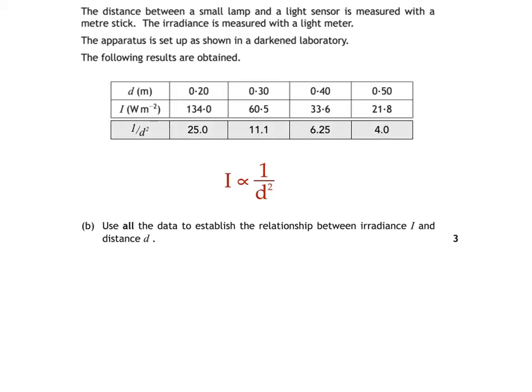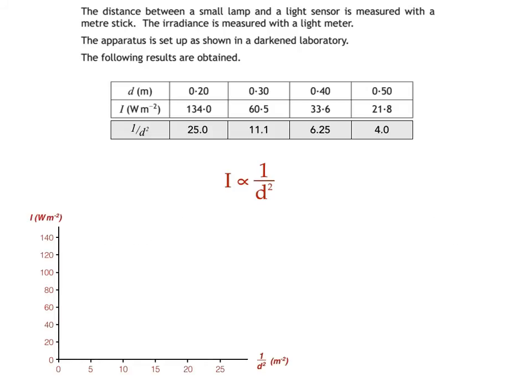If you're looking to establish a relationship graphically, then it's important to draw your graph on the graph paper provided. A sketch graph won't be accepted. Once you've worked out your scale and labelled your axes, plot the points as accurately as possible. The best fit line should be a straight line through the origin, so we can conclude that I is directly proportional to 1 over d squared.